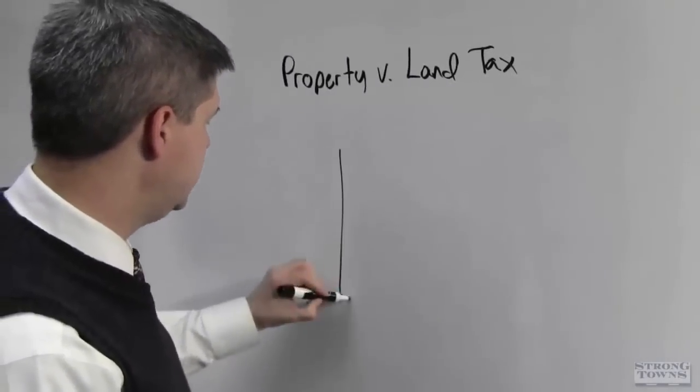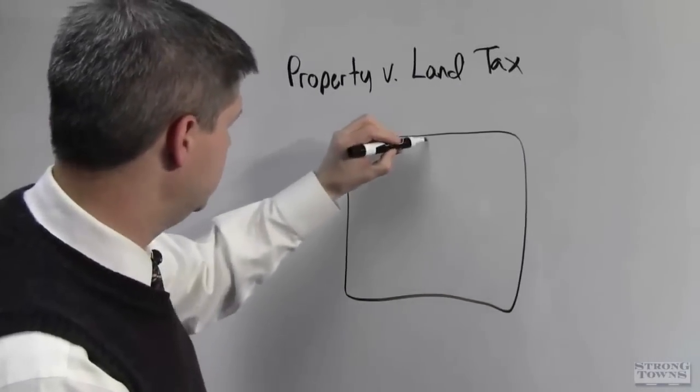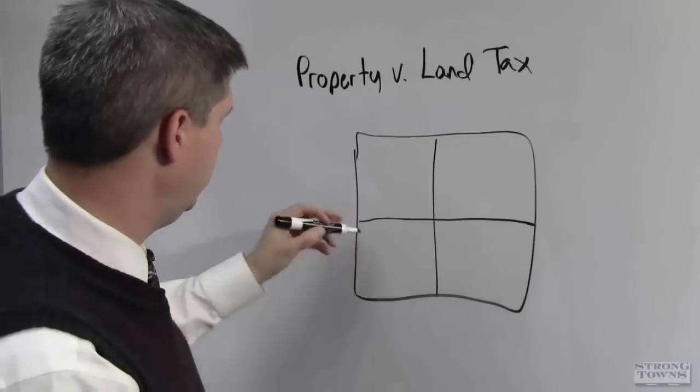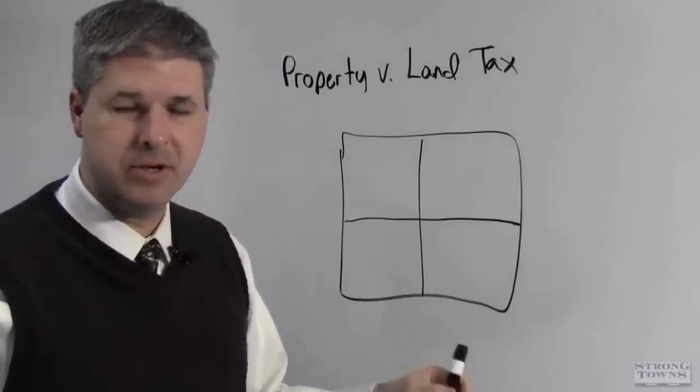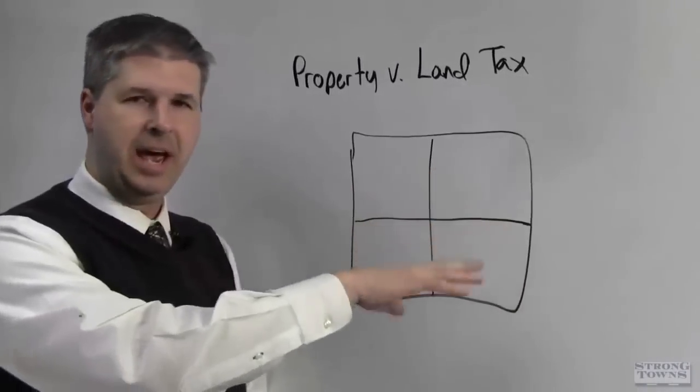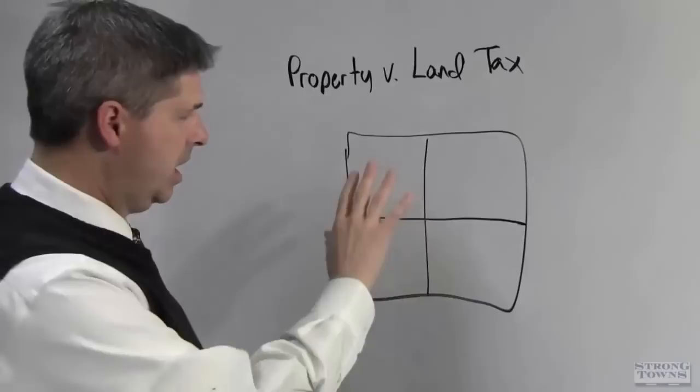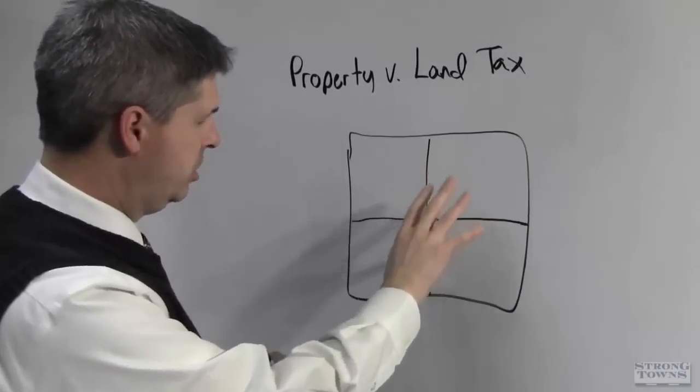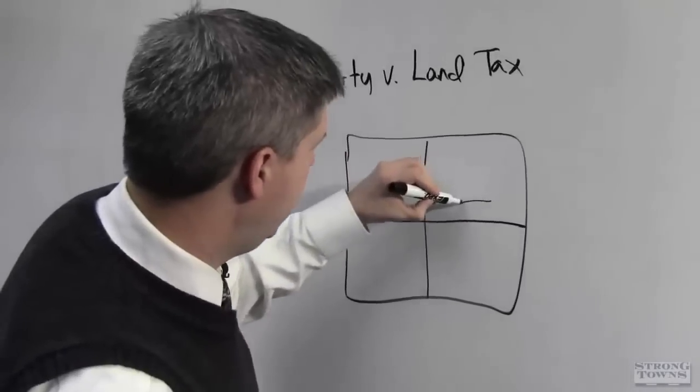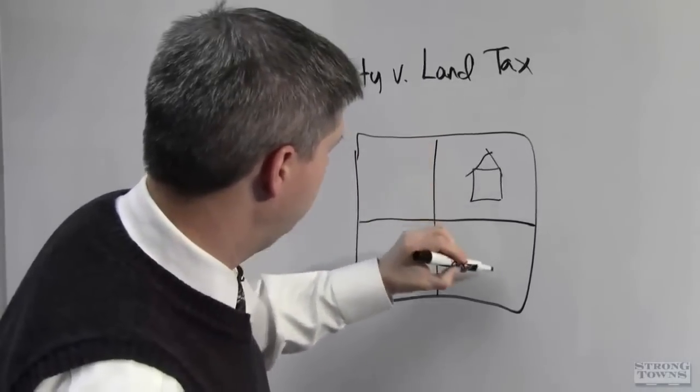Let's take four properties and one, two, three, four different properties right next to each other, all the same size, all the same characteristics. The assessor goes out, back up a sec, of these properties here you've got two of them that are vacant and two of them have a building on them.